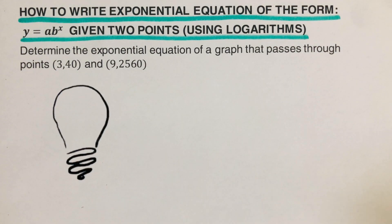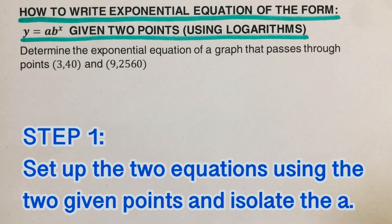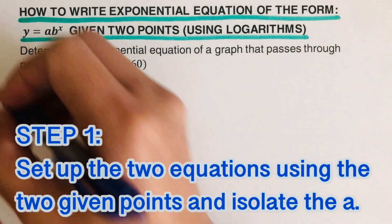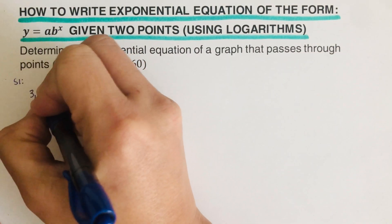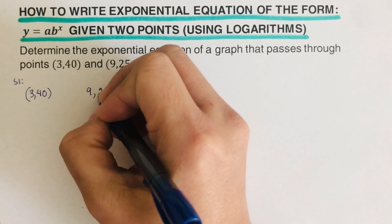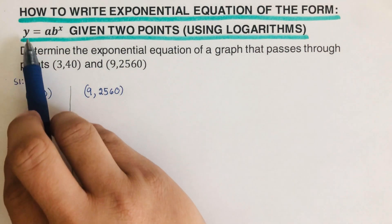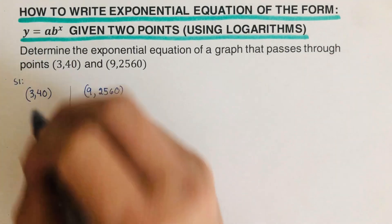There are some steps we need to follow in order to solve this kind of problem. The first step is to set up the two equations using the two given points and isolate the a. I'll label this as Step 1. Using these two points, we write the general equation y equals ab to the x for both of them.